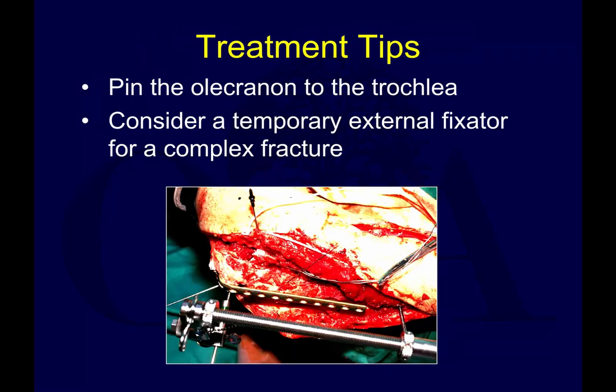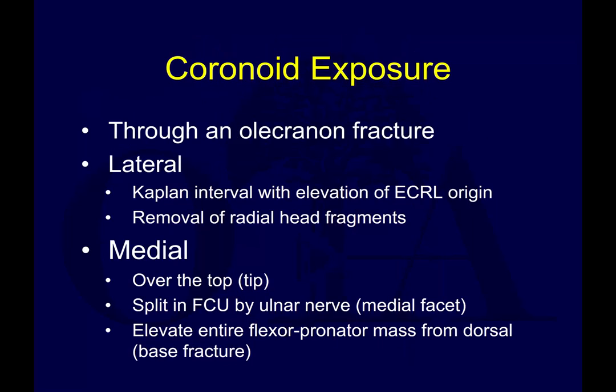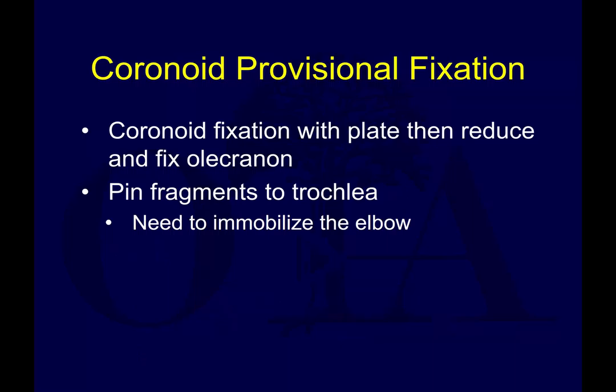Treatment tips from Dr. Ring: consider pinning the olecranon to the trochlea to control the proximal fragment. Consider a temporary fixator or distractor to help gain length for complex fractures. If the fracture is wide open, you can go through the fracture to address the coronoid first. Alternatively, through a lateral window using the Kaplan interval, address the coronoid and then deal with the radial head on the way out. If going medially with a large fracture, elevate the flexor pronator mass and come up on top of the fracture, then fix the olecranon and proximal ulna on the way out.